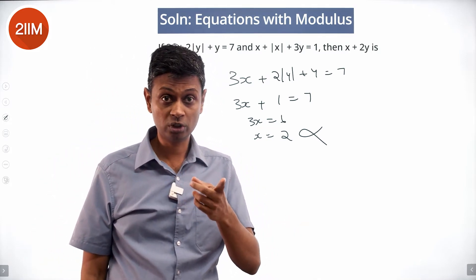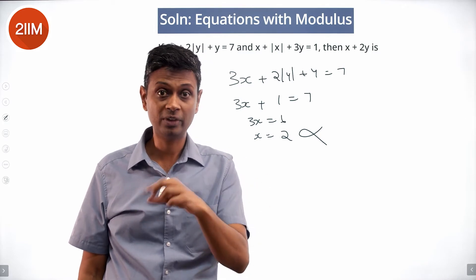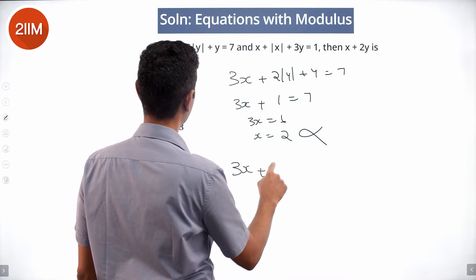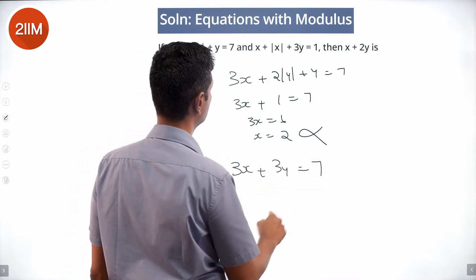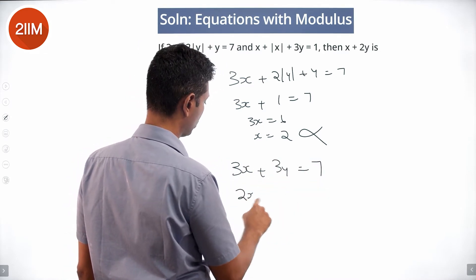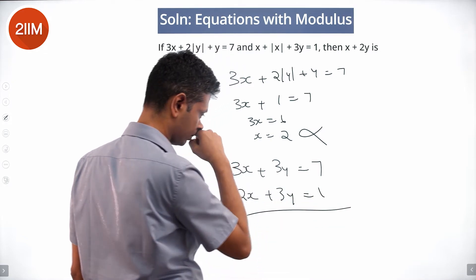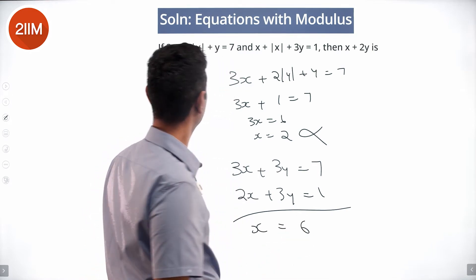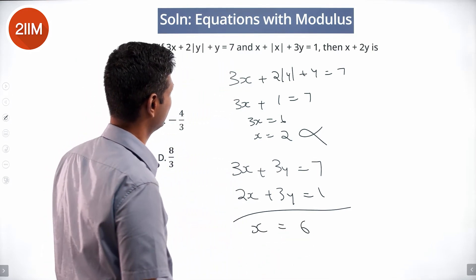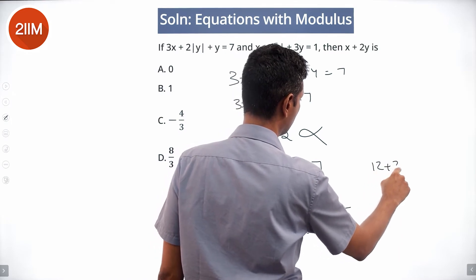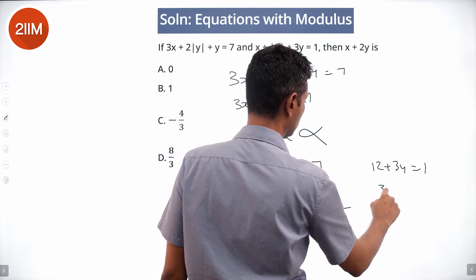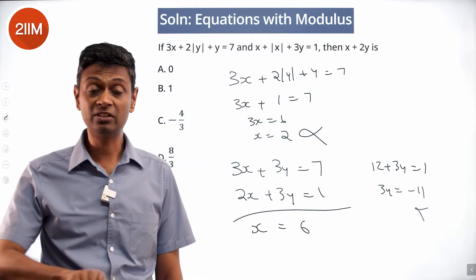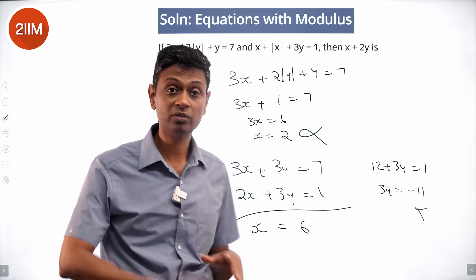Now try both x positive and y positive. The equations become 3x + 2y + y = 7, i.e., 3x + 3y = 7, and 2x + 3y = 1. Subtracting gives x = 6. Plugging x = 6 back: 12 + 3y = 1, so 3y = -11, meaning y is negative. But we assumed y positive, so this case yields no solution.